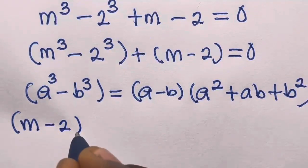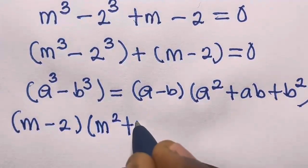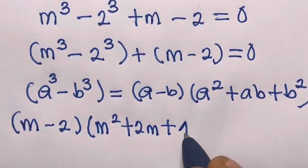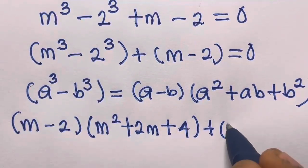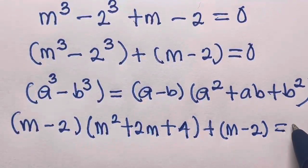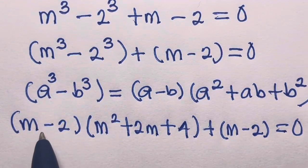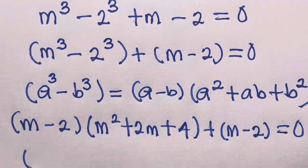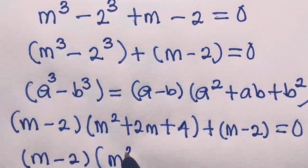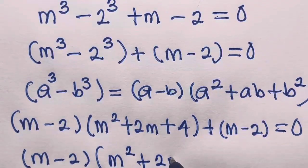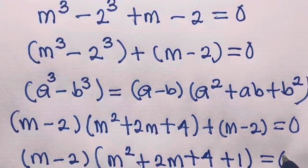Applying the difference of cubes, M cubed minus 2 cubed becomes M minus 2, multiplied by M squared plus 2M plus 4. Then we have plus M minus 2 equals 0.